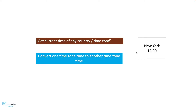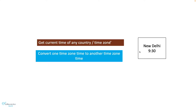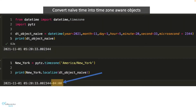For example, if right now it is 12 o'clock in New York and I want to know what time it is in New Delhi, we will learn how to get that done. We will also learn how to convert naive datetime objects into timezone-specific datetime objects. So let's get started.